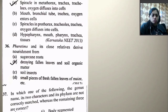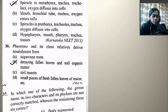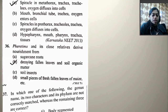Pheretima and its close relatives derive nourishment from decaying fallen leaves and soil organic matter — this is the right option, not soil insects or small pieces of fresh fallen leaves of maize.